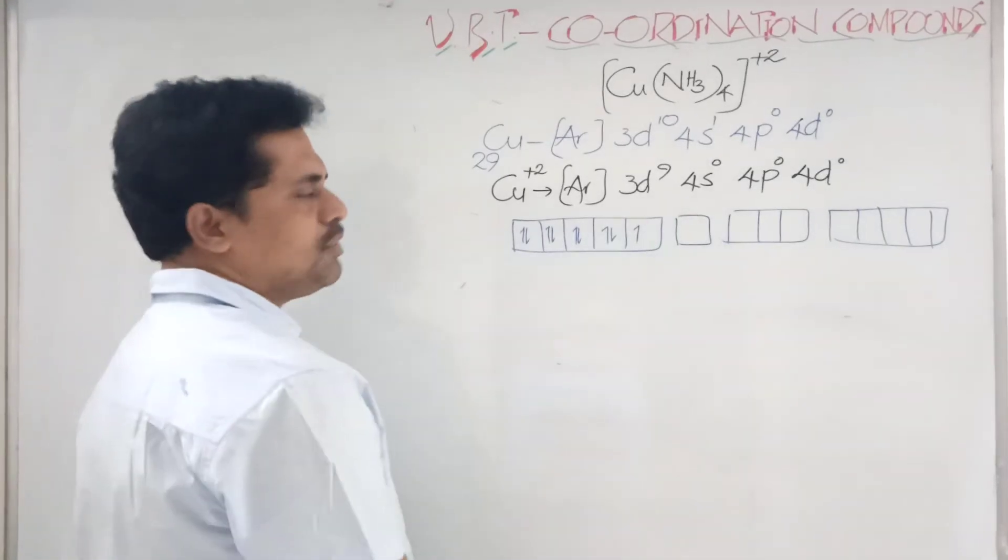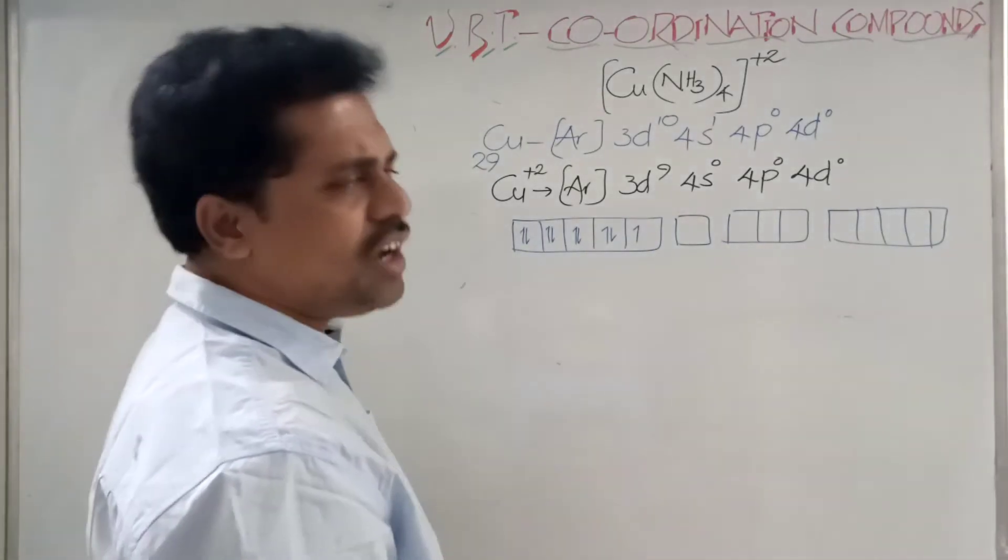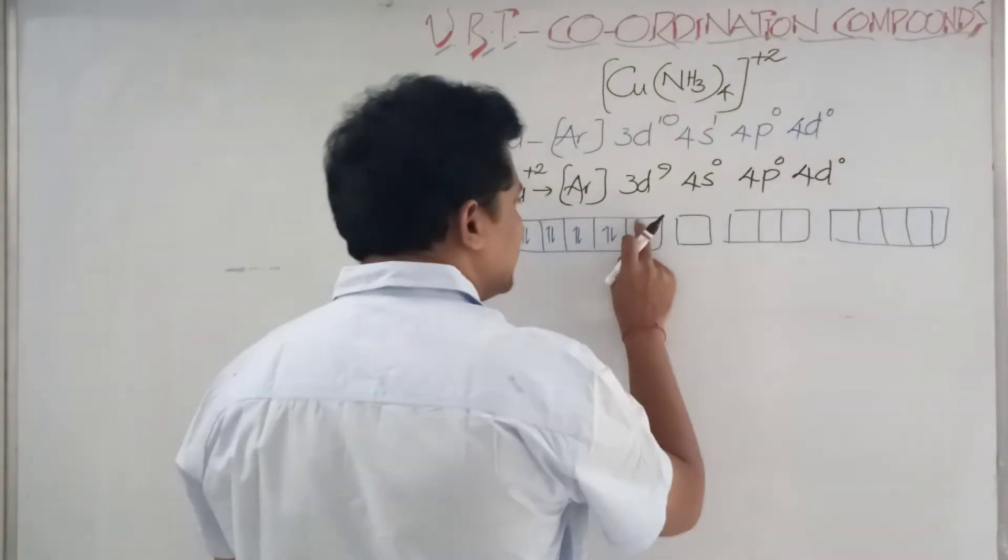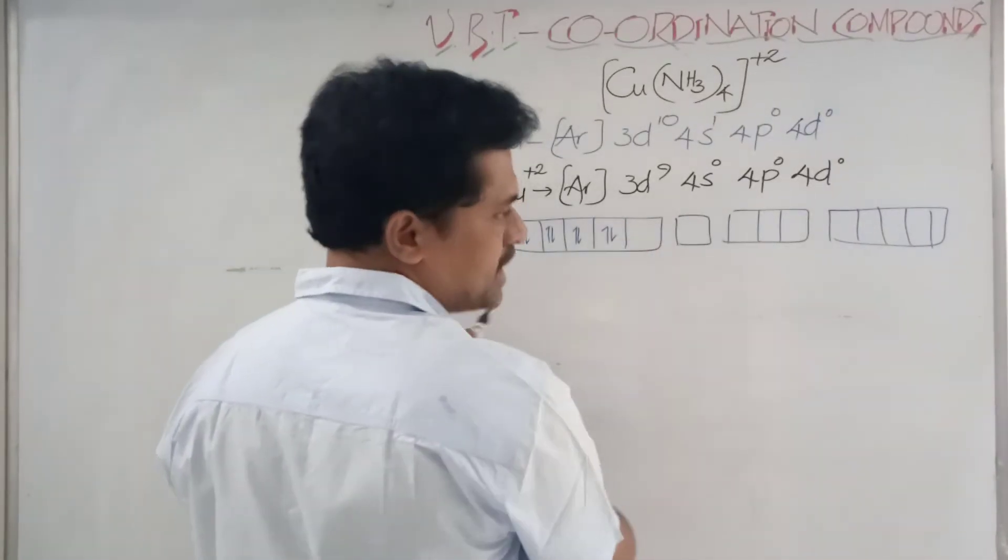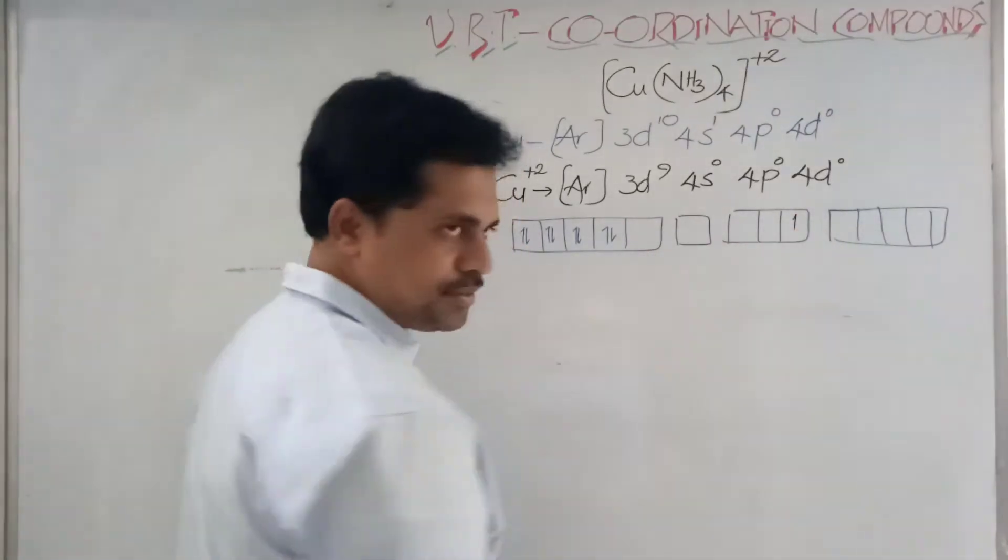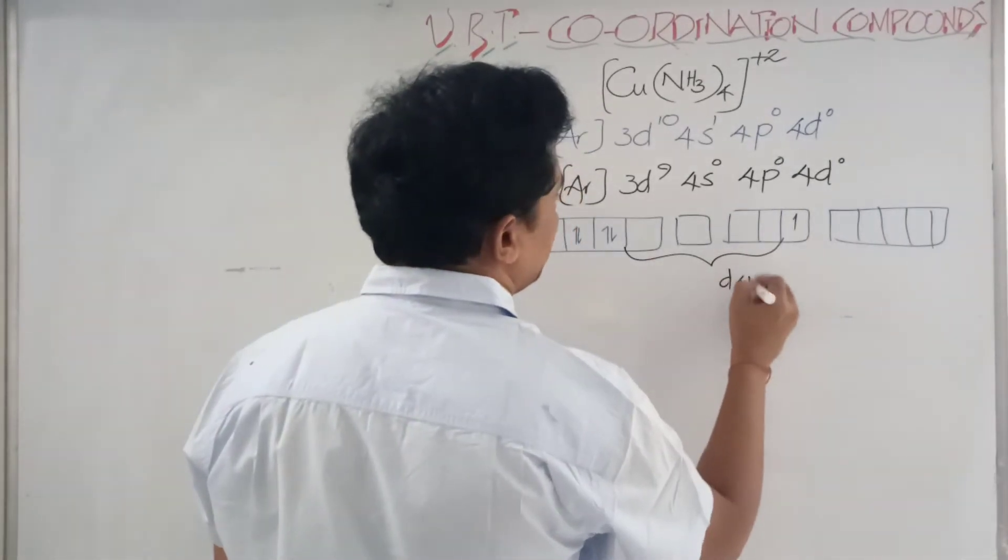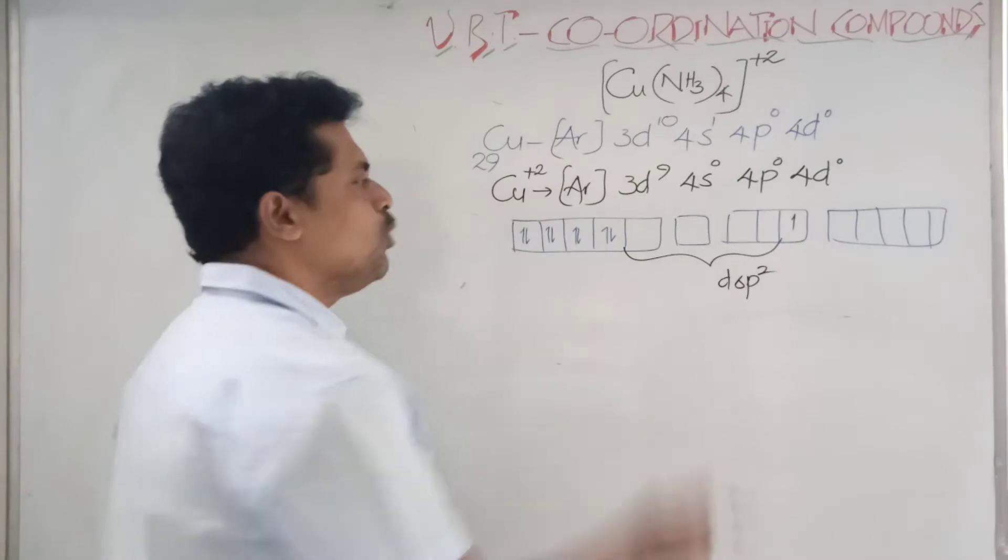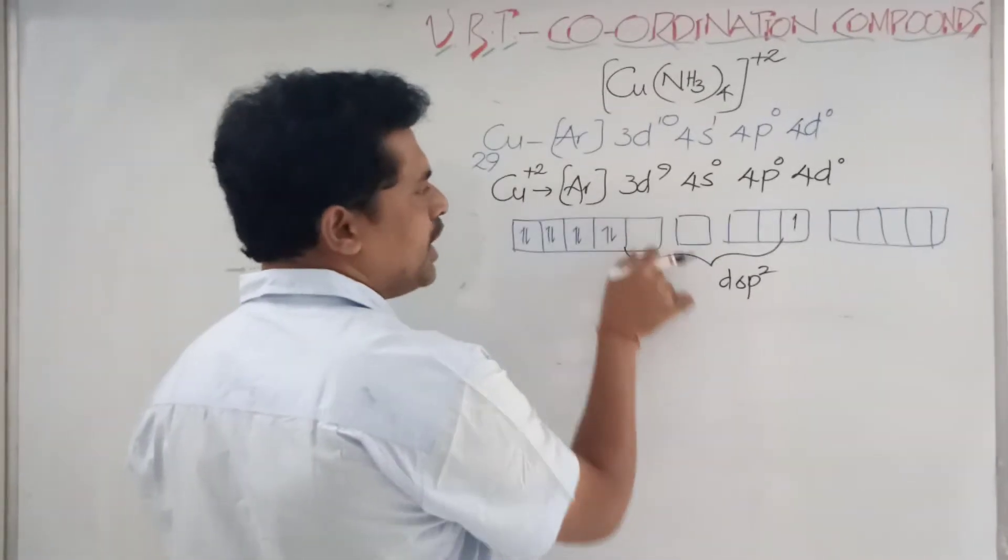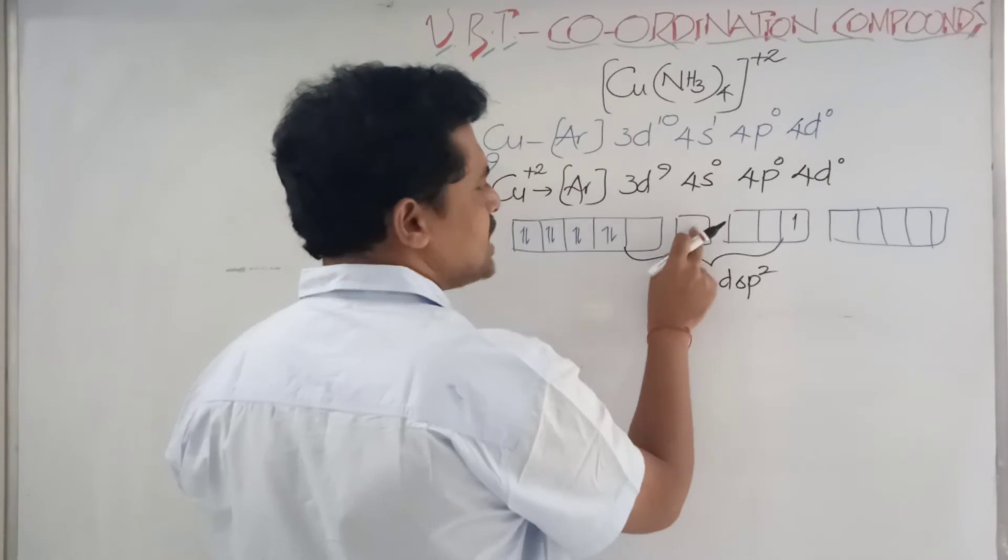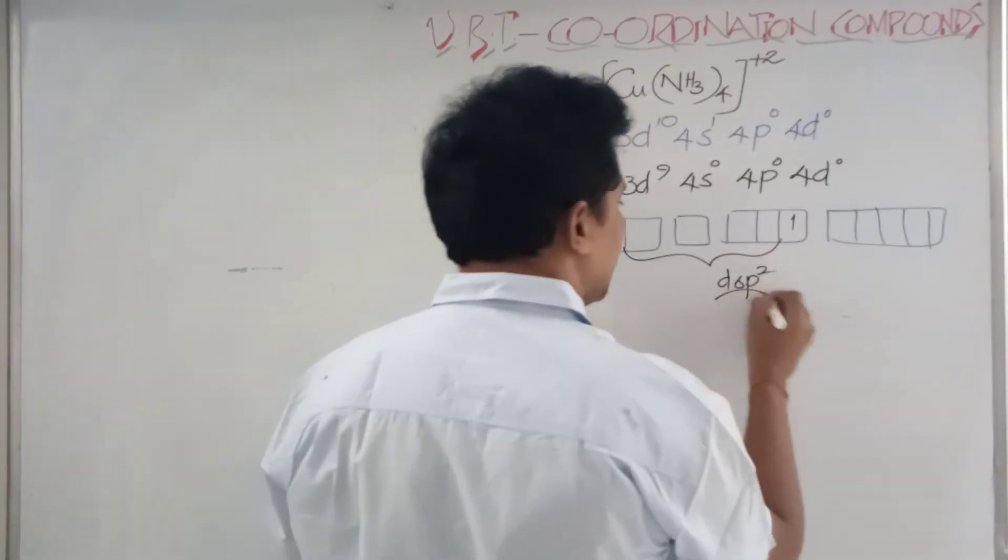To be square planar, it must be dsp² type of hybridization: s orbital, two p orbitals, and one d orbital. What generally we go with in some books is they say this electron is jumping from this place and it is moving here, and the hybridization is dsp².